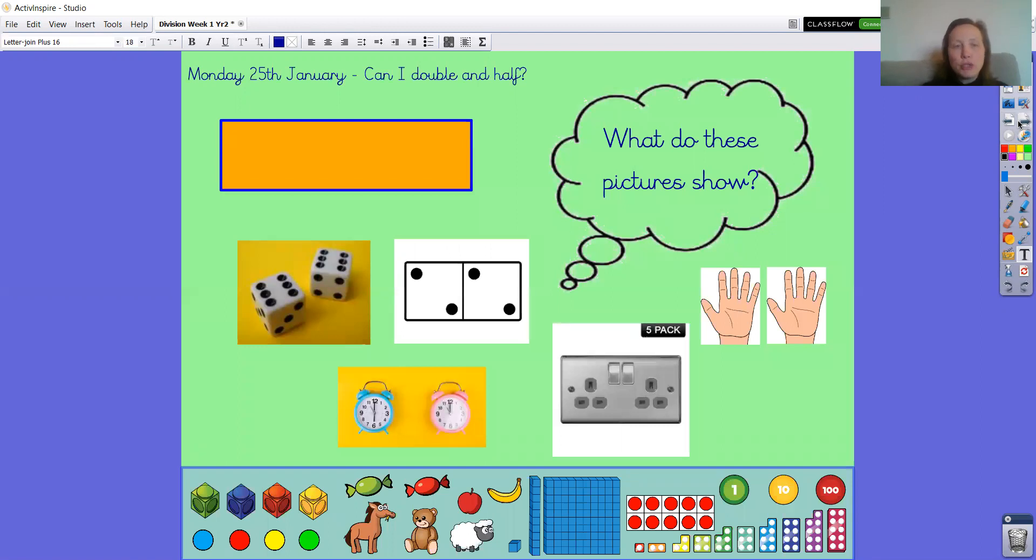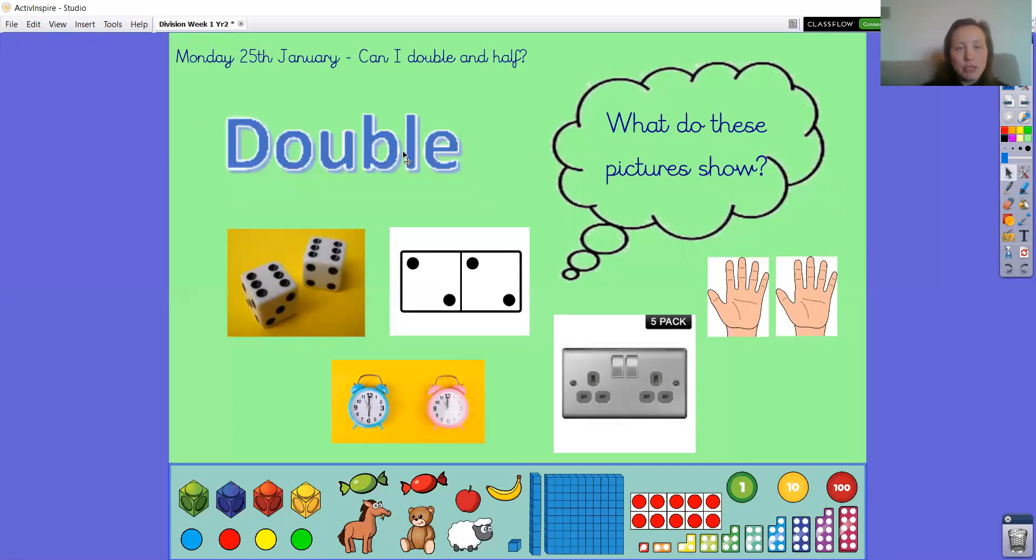Okay, here we go, moving into our halving and doubling. What does this picture show us? You're right, these pictures show us doubling. We have got two sixes. Doubling means showing us two of something: six and six, two and two. We have two hands, a double clock, and a double socket.